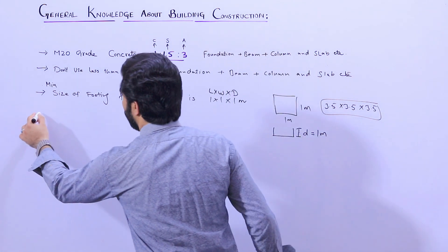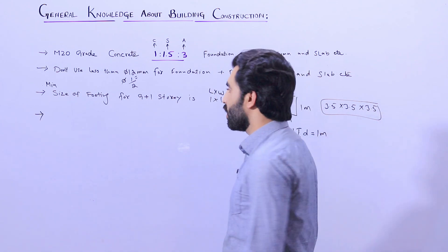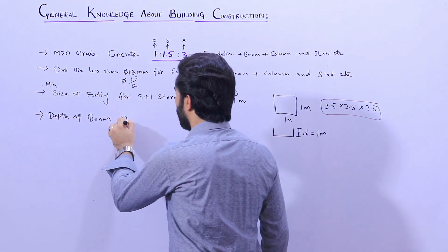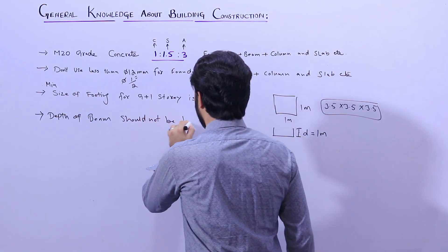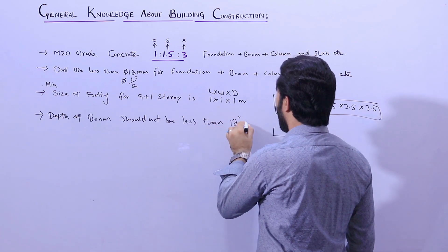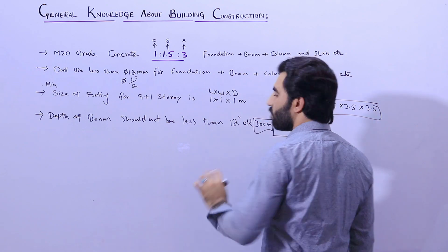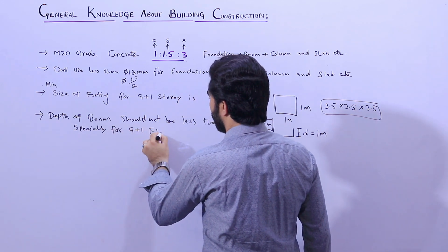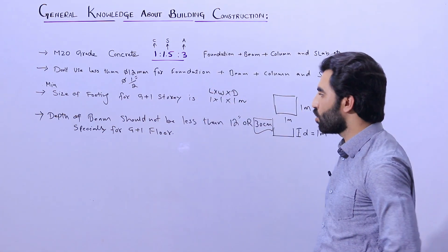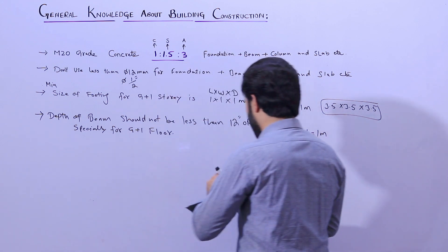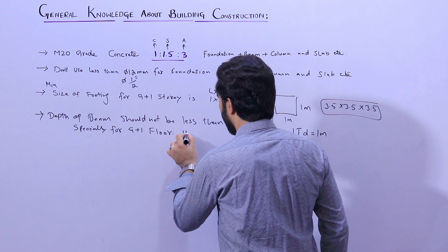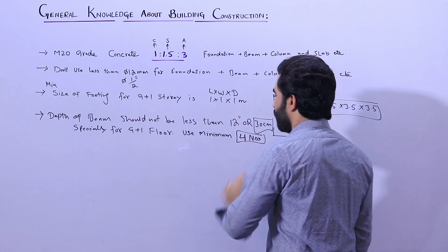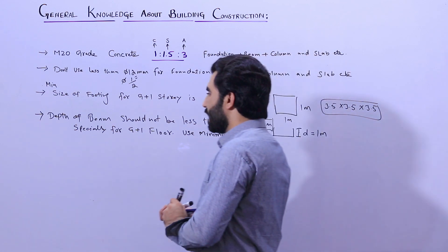The fourth point is also very important: the depth of the beam should not be less than 12 inches, or 30 centimeters, especially for G plus one — that is two floors. Use a minimum of four steel rods in the beam. This is the minimum quantity.